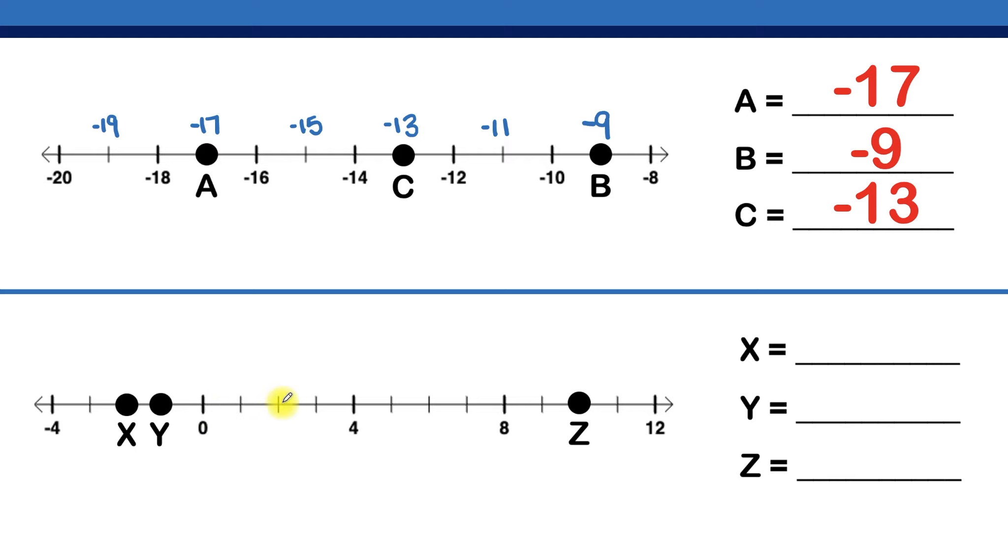And we have all these dashes between zero and four. So what do you think each of these will be? Well, we can't count by fives, that's way too big. We can't count by fours, because four is right here.